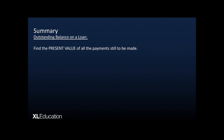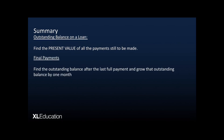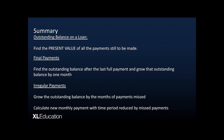To summarize: for the outstanding balance on a loan, find the present value of all payments still to be made. To find the final payment, find the outstanding balance after the last complete payment and grow it by one month. For irregular payments, grow the outstanding balance by the months of payments missed, then calculate the new monthly payment with the time period reduced by the missed payments. Practice these concepts thoroughly, as they require time to master.